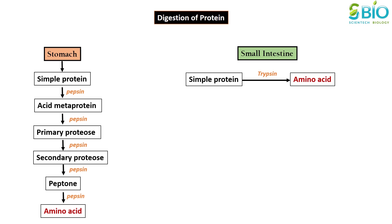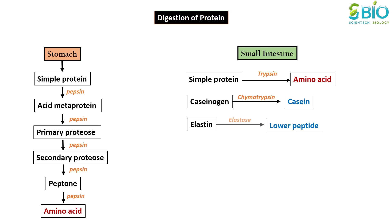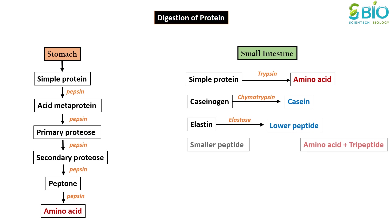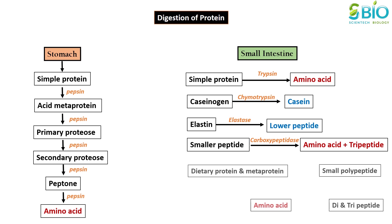The major proteolytic enzymes include trypsin, chymotrypsin, elastase, and carboxypeptidase. These enzymes digest protein into short chains of a few amino acids. The final stage of protein digestion occurs on the brush border of the small intestine epithelium, where membrane-bound peptidases complete digestion of oligopeptides into either single amino acids or dipeptides and tripeptides.